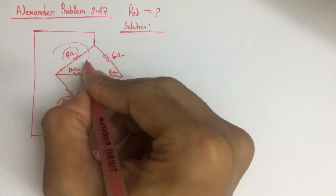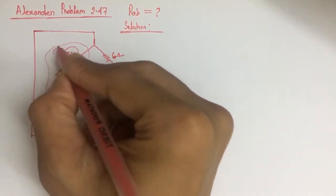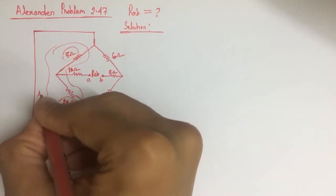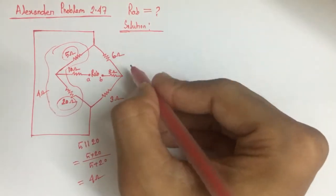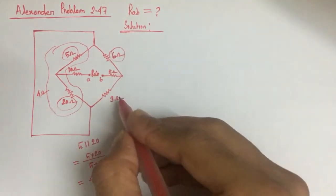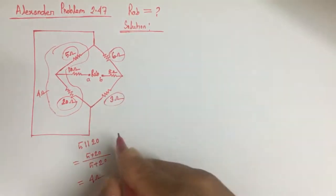So parallel resistance of this 5 ohm and 22 ohm is 4 ohm. Now, this 6 ohm resistance is in parallel with this 3 ohm resistance.